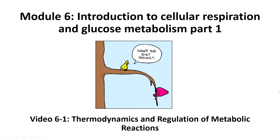This is Module 6, Introduction to Cellular Respiration and Glucose Metabolism, Part 1. For the remainder of the semester, we will be discussing different metabolic pathways, and we're going to start by discussing aerobic cellular respiration, which proceeds in three stages, the first being glycolysis. For this video, 6-1, I'm going to describe the thermodynamics of all types of metabolic reactions in all pathways, and in general, how these pathways are regulated.